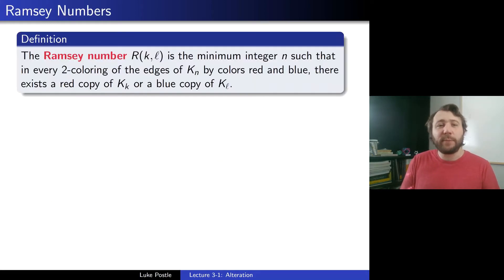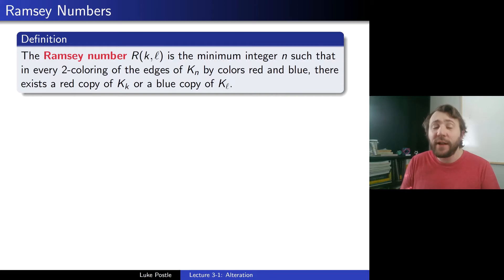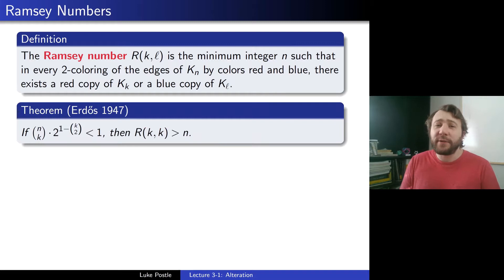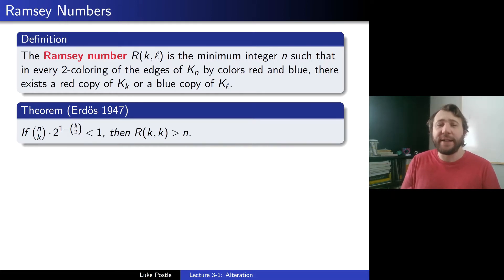So let's start with Ramsey numbers. The Ramsey number R(K,L) is the minimum integer N such that in every two-coloring of the edges of K_N by colors red and blue, there exists a red copy of K_K or a blue copy of K_L. Most interesting here are the diagonal Ramsey numbers when K equals L. We had a result from the first week, Erdős 1947, that said if N choose K times 2 to the 1 minus K-choose-2 is less than 1, then R(K,K) is greater than N. We did that just using a union bound on the probability of monochromatic K_Ks.